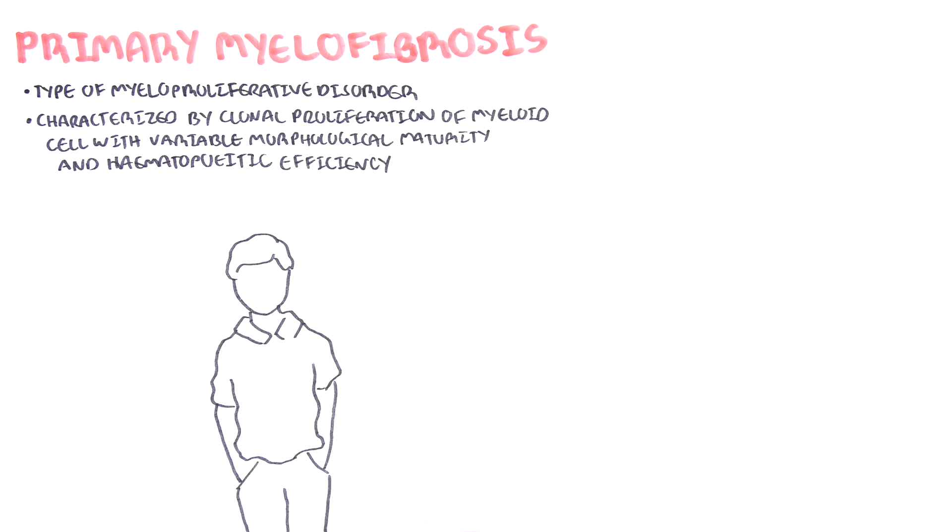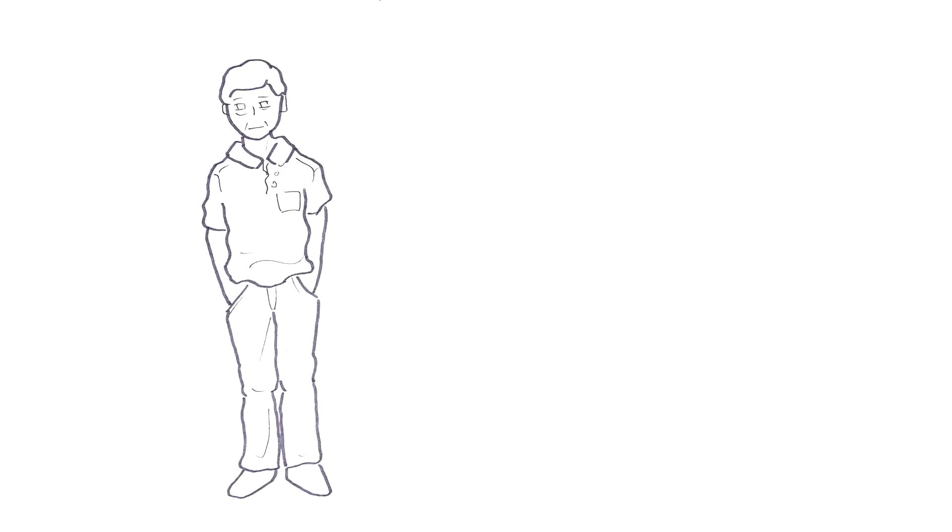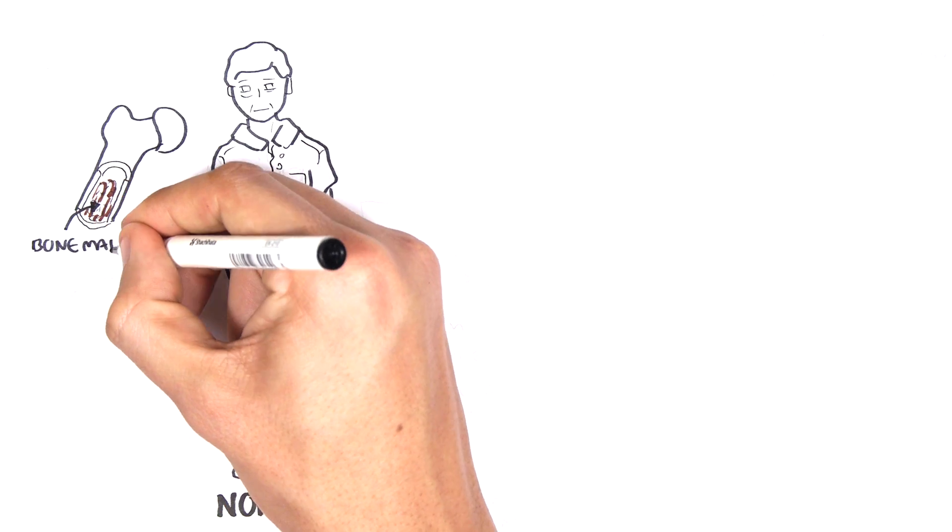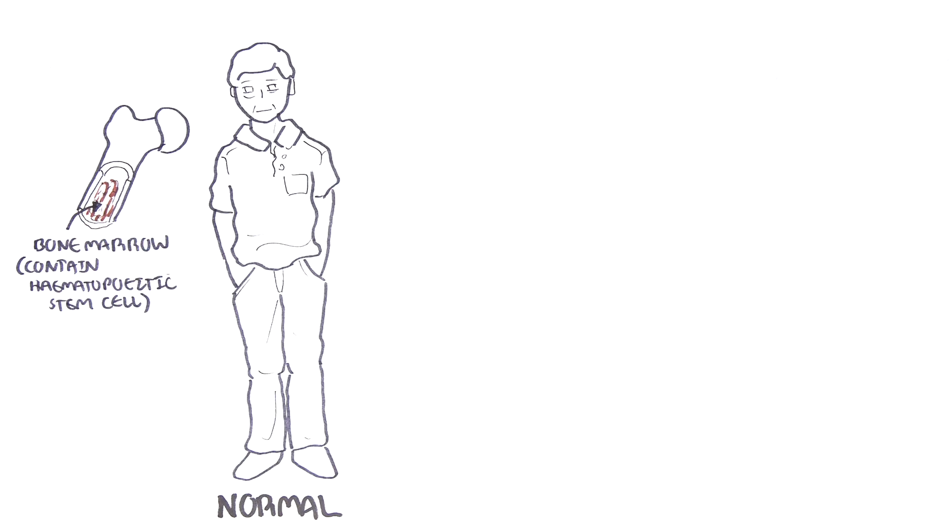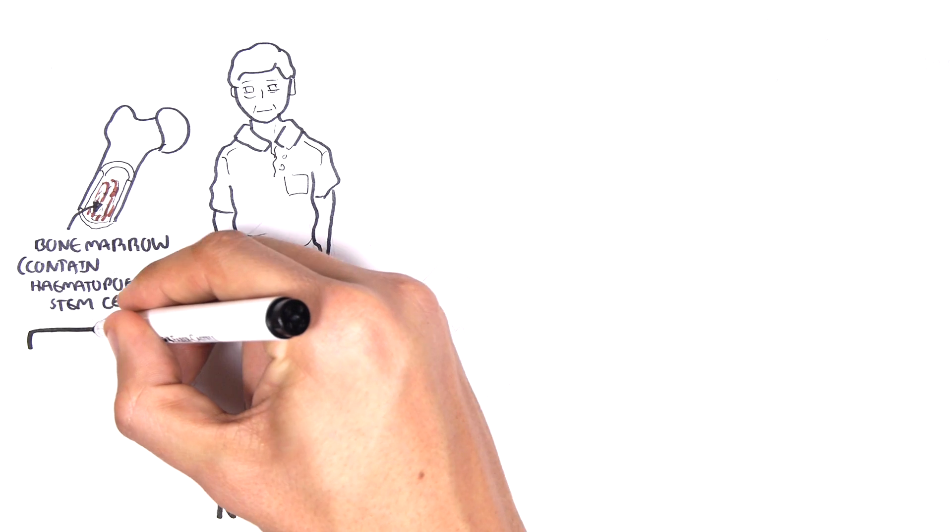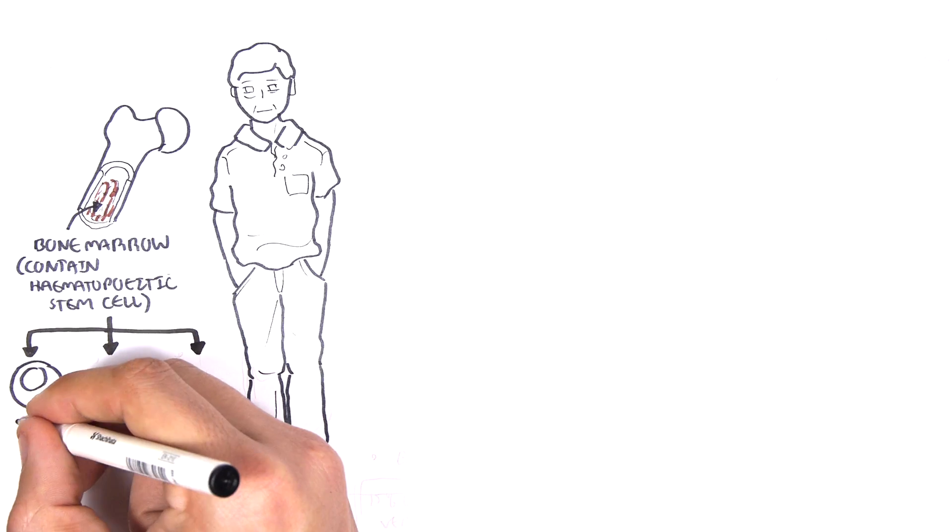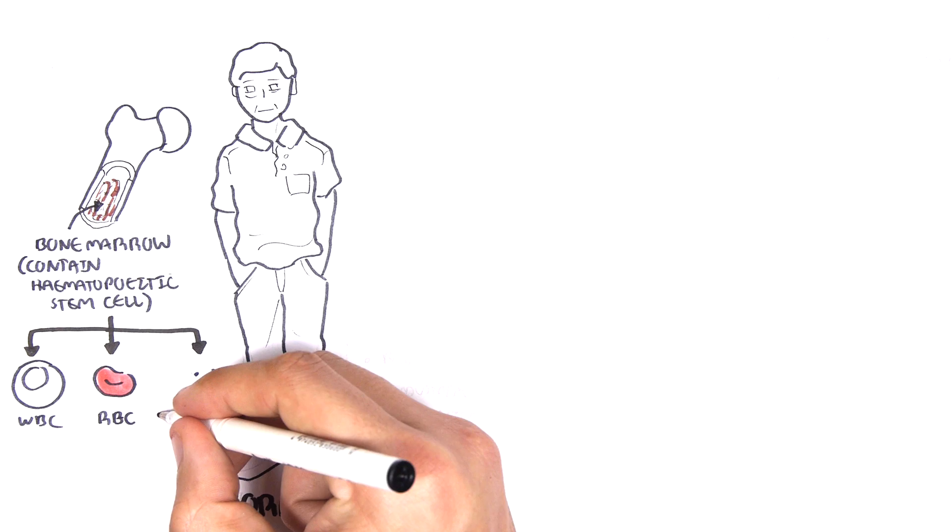Let's look at the normal and compare it to primary myelofibrosis. Normally, we have bones that contain bone marrow. This bone marrow is mostly found in flat bones in adults and contains hematopoietic stem cells. These stem cells have the potential to become any blood cell type in our body. For example, the hematopoietic stem cells can become white blood cells, red blood cells, or megakaryocytes, which subsequently become platelets.